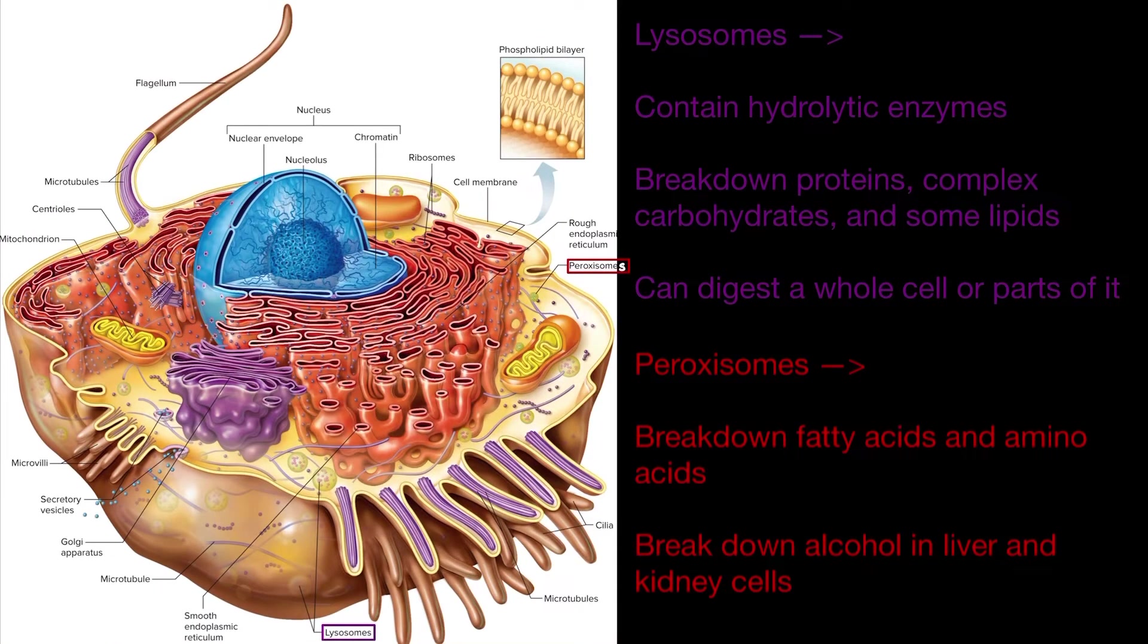One of them is going to be lysosomes. Lysosomes look like this and they contain hydrolytic enzymes and those enzymes are going to break down proteins, complex carbohydrates, and some lipids. They can also digest a whole cell or parts of it if need be.